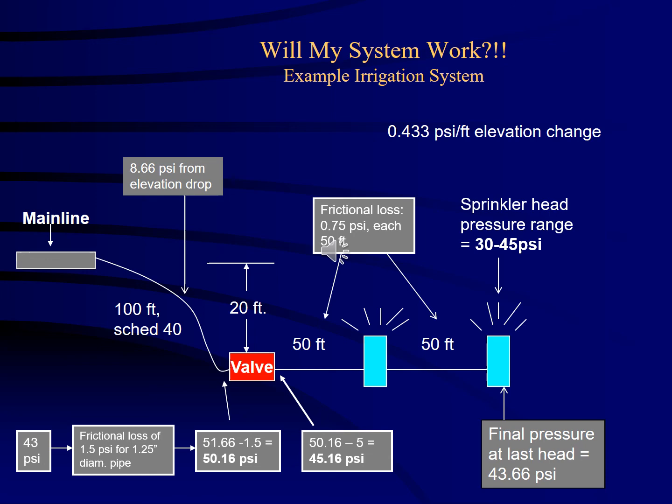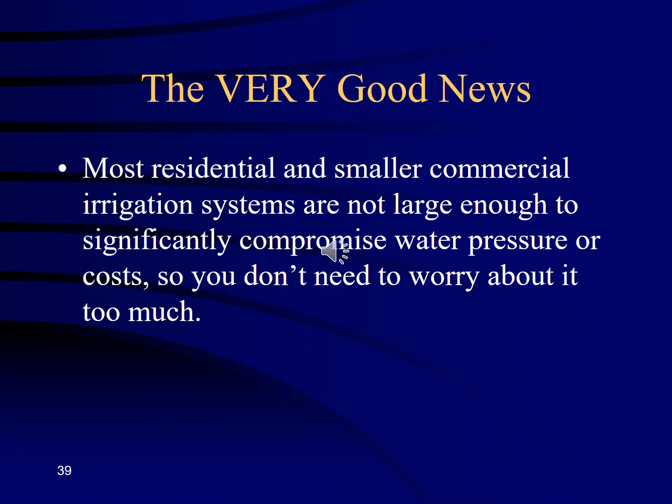The good news is that most smaller residential and commercial irrigation systems are not large enough to significantly compromise water pressure. So you don't need to worry about it too much. If you have insignificant elevation changes, the pressure is not going to go up and down enough to matter.